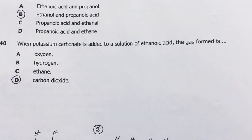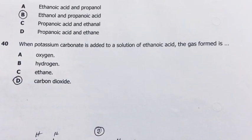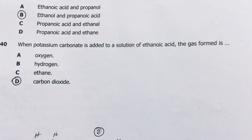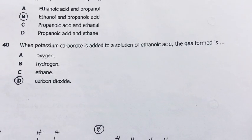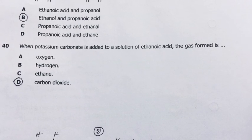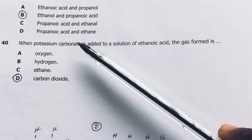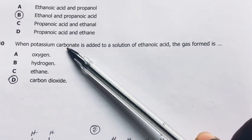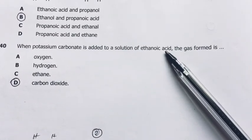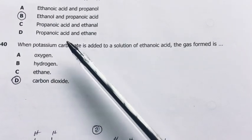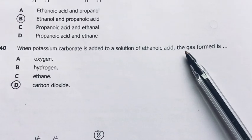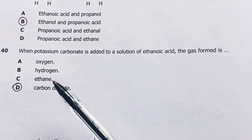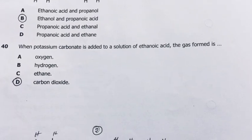Number 40, our last question here. When potassium carbonate is added to a solution of ethanoic acid, the gas formed is carbon dioxide. Carbonate, the key word here is a carbonate. And then the key word here is acid. Acids react with carbonates to produce carbon dioxide, water, and salt. And now here they're looking for a gas. Our gas is CO2. This marks the end of this paper.